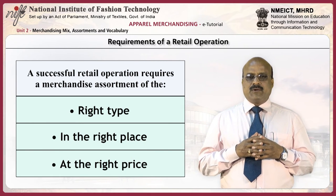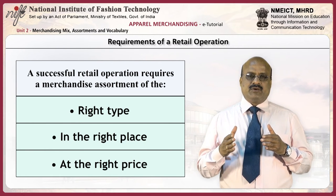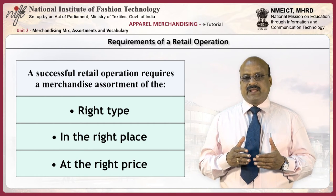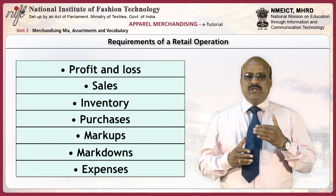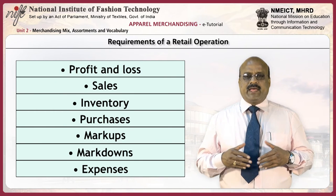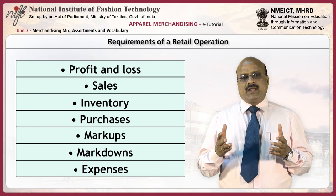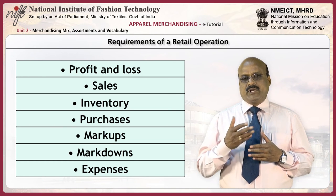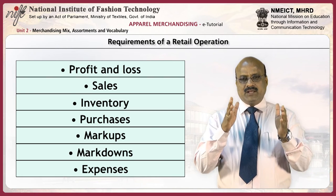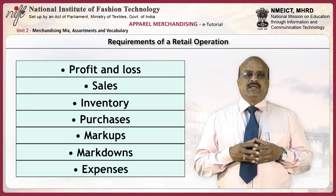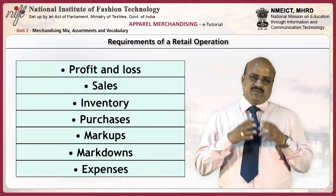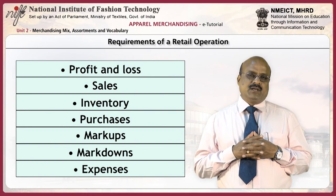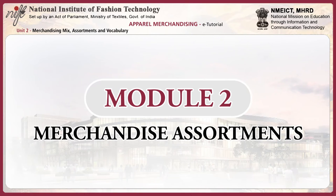A successful retail operation requires a merchandise assortment of the right type in the right place and at the right price. To accomplish this objective, activities such as profit and loss, sales, inventory, purchases, markups, markdowns and expenses must be planned at least six months in advance by the buyers and managers.